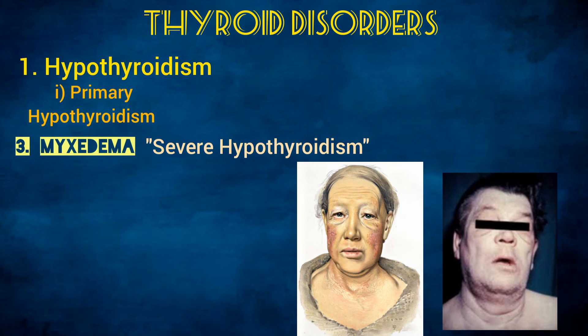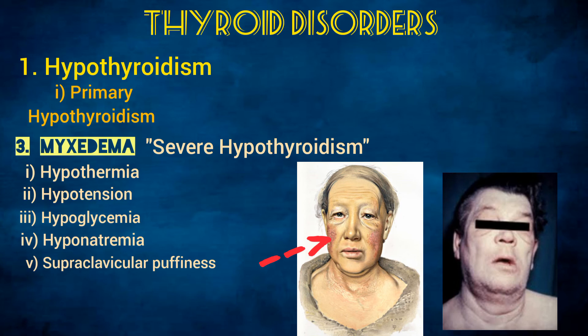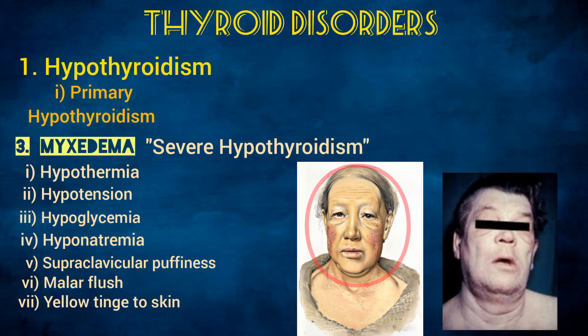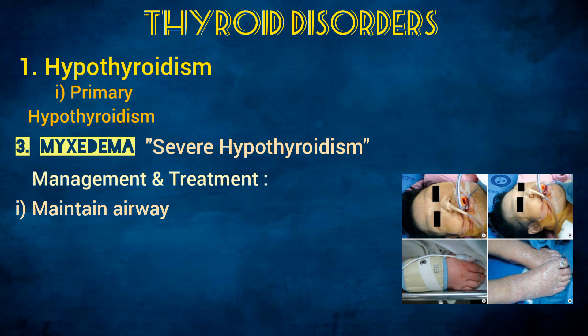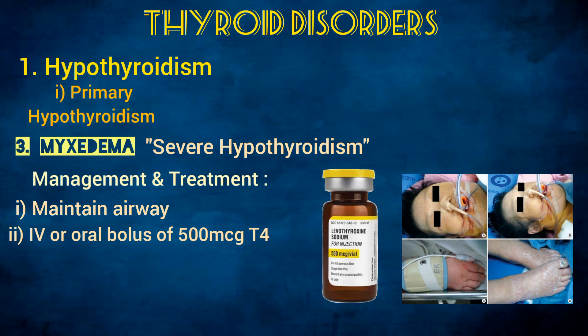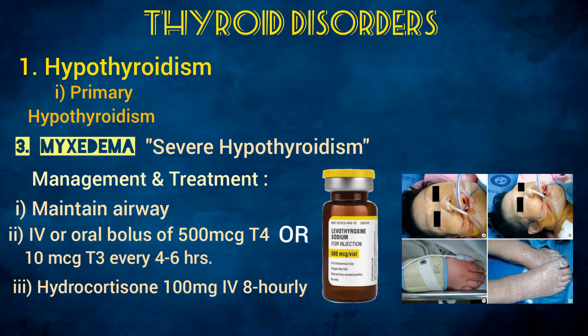The last form is myxedema, which is severe hypothyroidism. Its clinical features include hypothermia, hypotension, hypoglycemia, hyponatremia, supraclavicular puffiness, malar flush, yellow tinge to the skin due to increased dermal keratin, and altered mental state. Myxedema is a medical emergency requiring immediate attention: first maintain the airway and provide respiratory support, then give an IV or oral bolus of 500 micrograms of T4, or 10 micrograms of T3 every 4 to 6 hours. These patients may also have adrenal insufficiency, so glucocorticoid therapy such as hydrocortisone 100 mg IV 8-hourly is also advised.